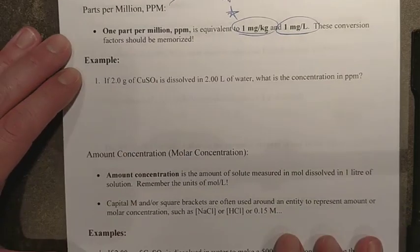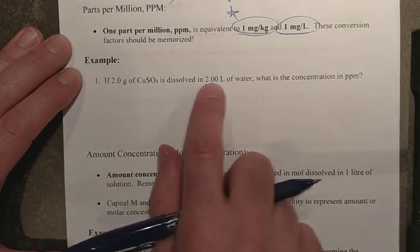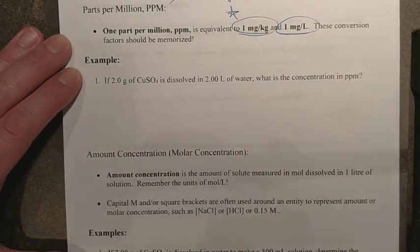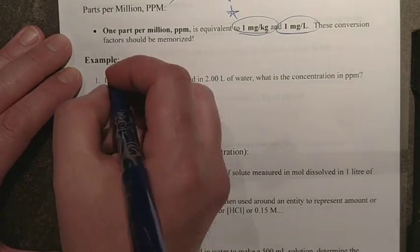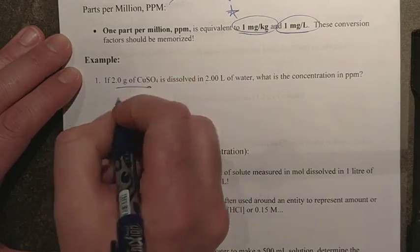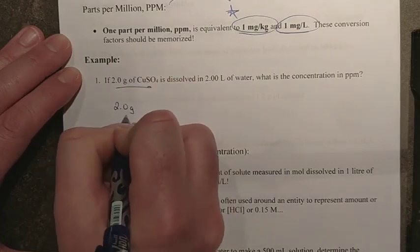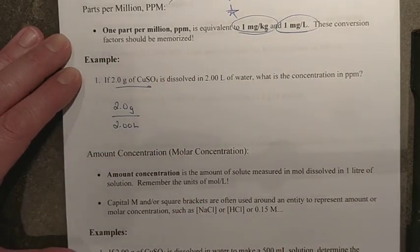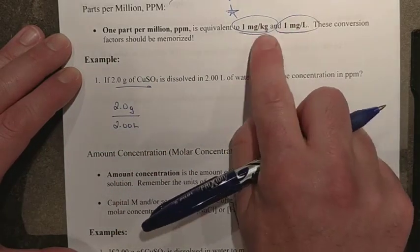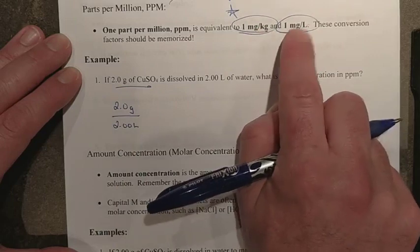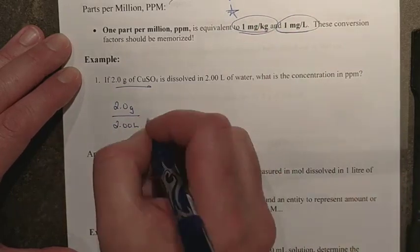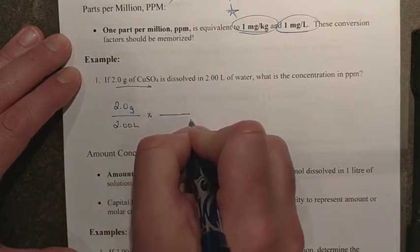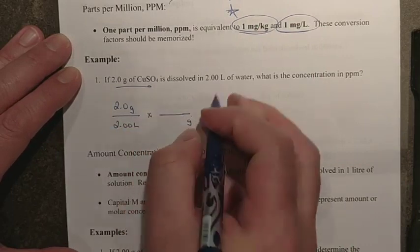So here we go. We have two grams of copper 2 sulfate dissolved in two liters of water. I want my concentration in parts per million. Well, I can just go with my numbers. There's my solute, 2.0 grams. There's my solvent, 2.00 liters. I have grams per liter. If I take a look at my two starting units, I just need to get to milligrams per liter. So it's just a quick metric conversion. Grams would go on the bottom to cancel. Milligrams up top.